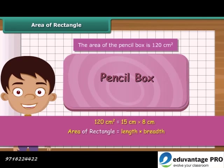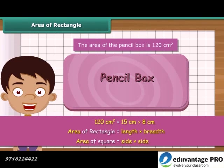Since a square is a rectangle whose length and breadth are equal, the area of a square is obtained by multiplying its side by its side.